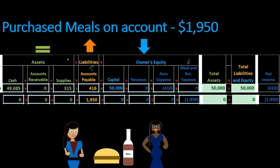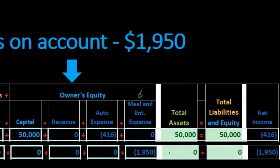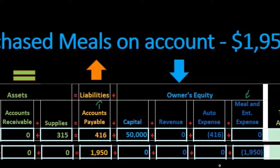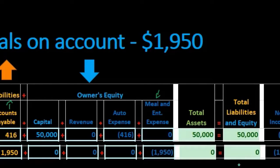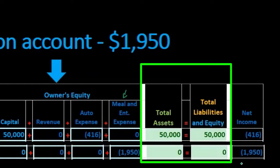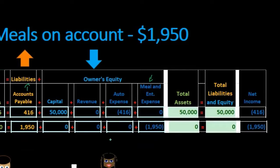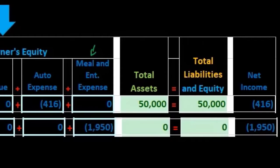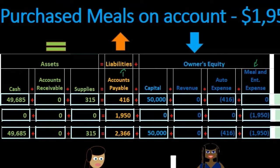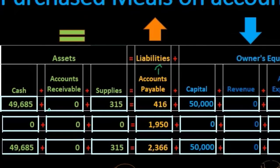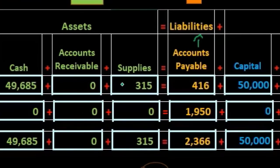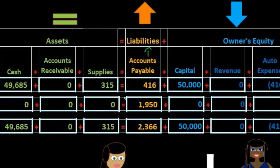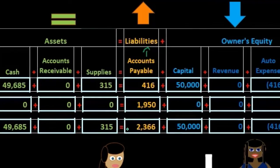Looking at the equation: nothing happened to assets; liabilities are increasing; equity is decreasing. Total assets stay at zero change; total liabilities and equity — with liabilities going up and equity going down — net to zero change. Net income is affected — it's going down. Revenue minus expenses: no revenue, only expenses so far, so we have a net loss of $1,950. Bringing down the balances: cash $49,685 plus zero is $49,685; accounts receivable zero; supplies $315 plus zero is $315.